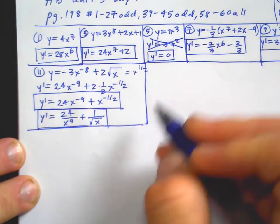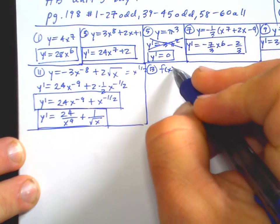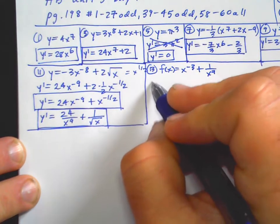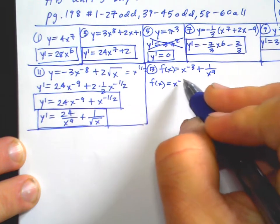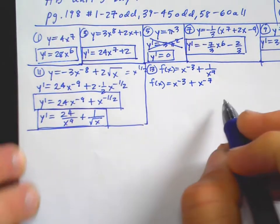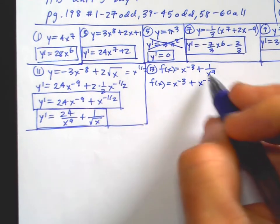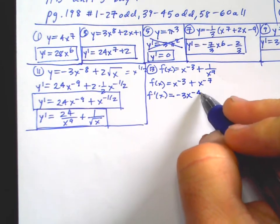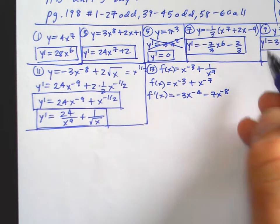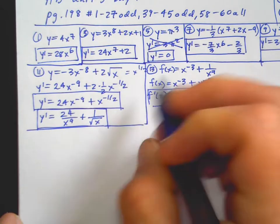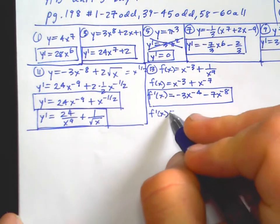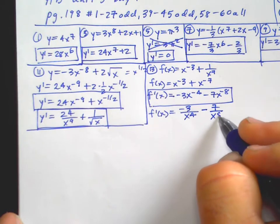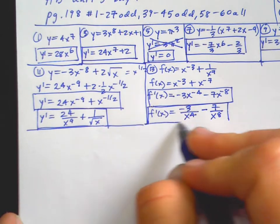Number 13: f(x) equals x to the negative 3 plus 1 over x to the 7th. I would change this to all negative exponents. You could do quotient rule, but that's unnecessarily messy. So f prime of x equals negative 3x to the negative 4 minus 7x to the negative 8th. I'm usually going to want you to change it back to positive exponents for your final answer.